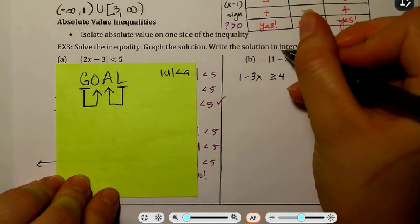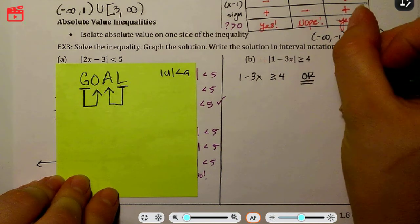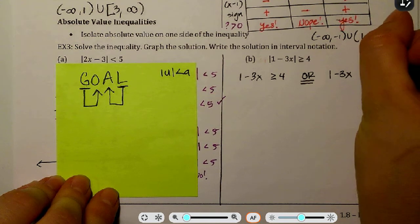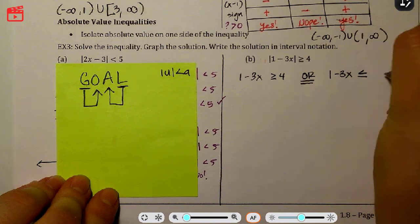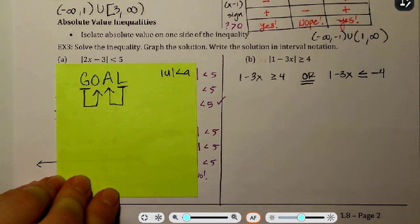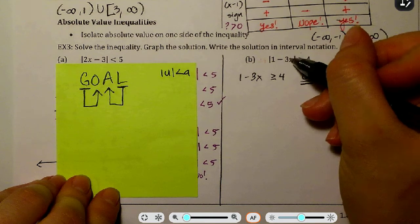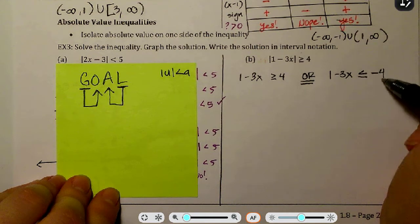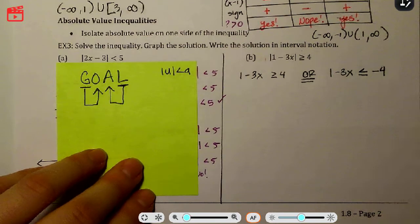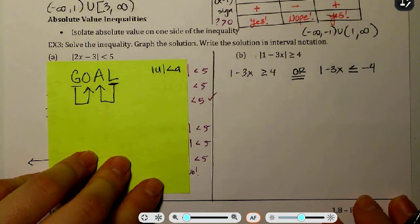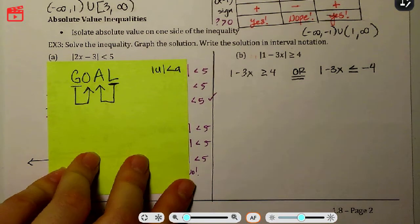Then what happens is, we take this value, 1 minus 3x, and then our sign flips, and we take the negative of the 4. Okay. So copy-paste. Copy that. Flip. Flip. Okay? So hopefully this is a review. If not, we're learning it now. Okay. So let's go ahead and solve for the x.